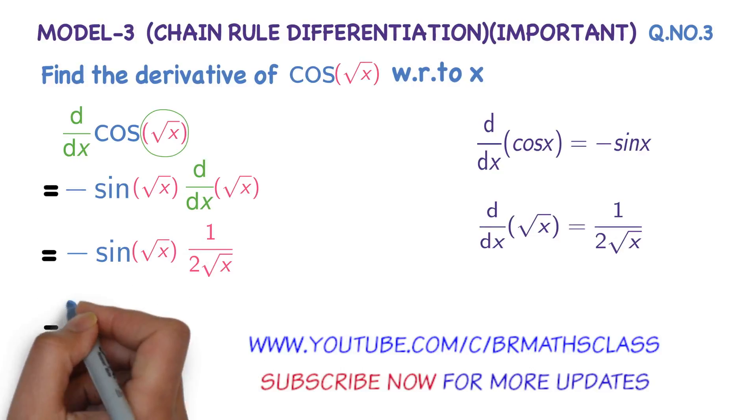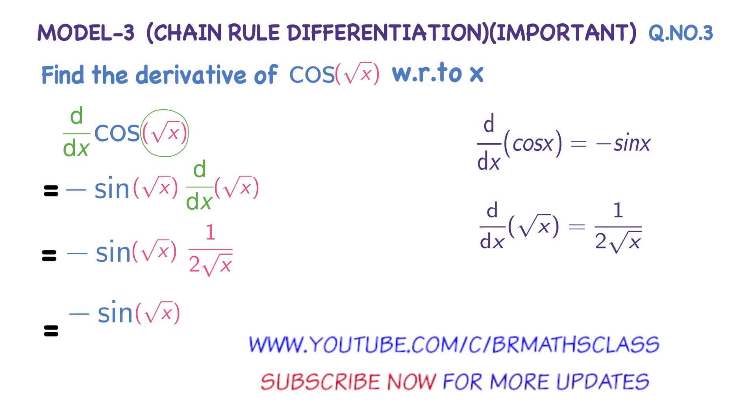The derivative of √x is 1/(2√x). Therefore, minus sin(√x) divided by 2√x. Therefore, the derivative of cos(√x) is minus sin(√x) divided by 2√x.